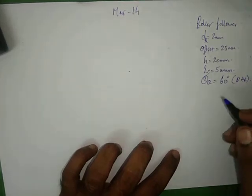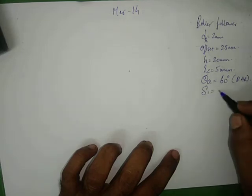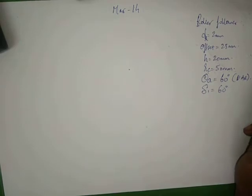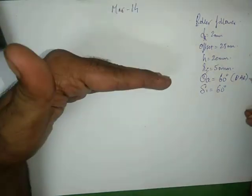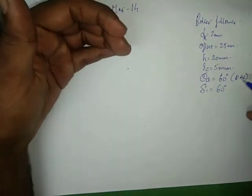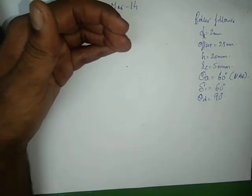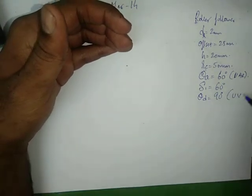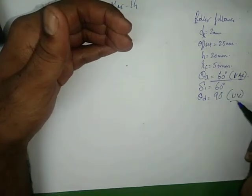The follower remains at rest for the next 60 degrees — delta 1 is equal to 60 degrees, no motion. The follower then returns to its original position during the next 90 degrees of cam rotation with uniform velocity (UV). The rise is UAR and the return is UV.